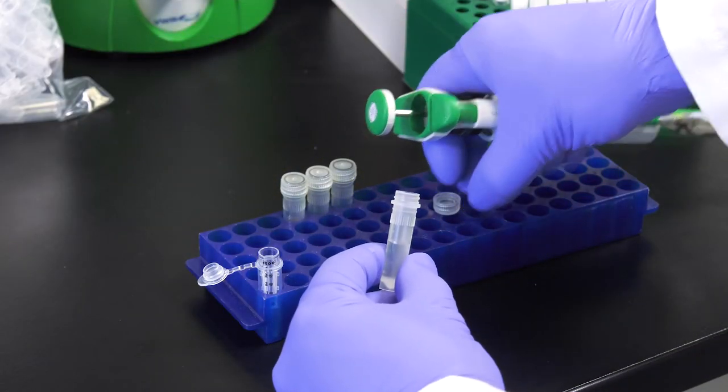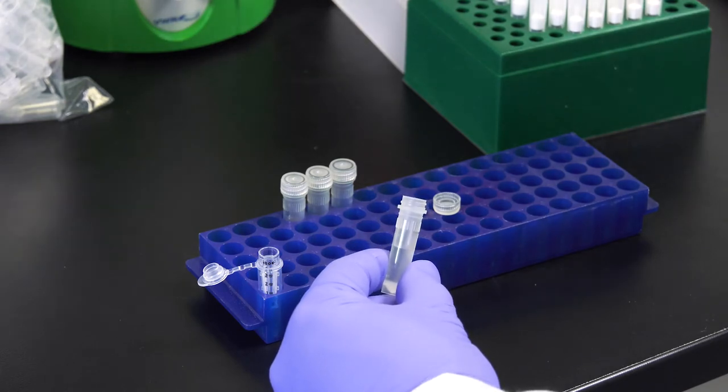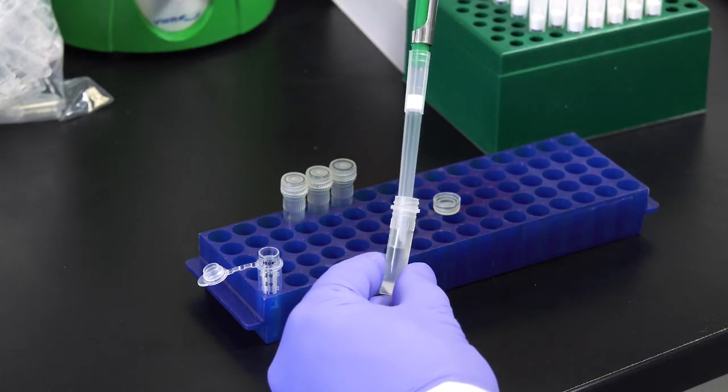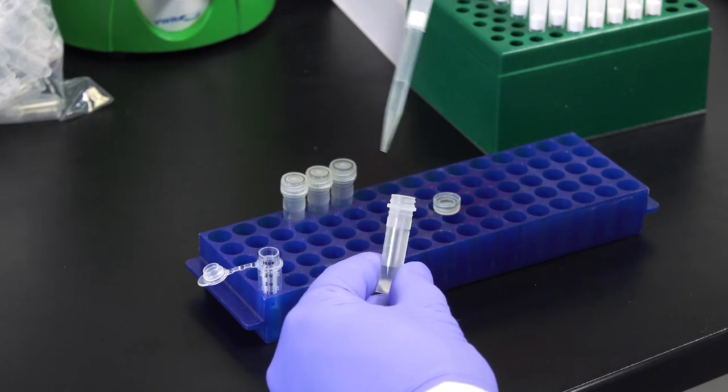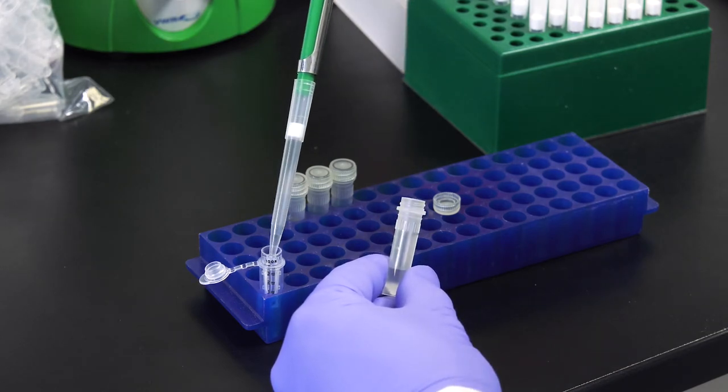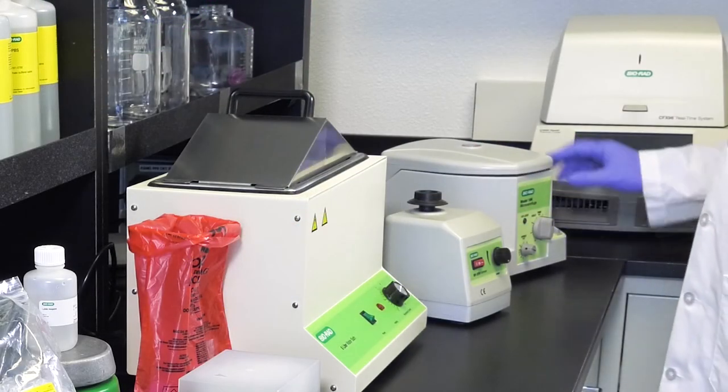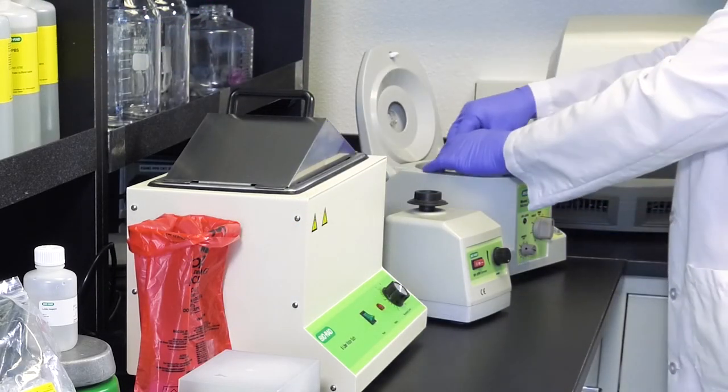Place the purification column in a collector tube and add 500 microliters of the supernatant to the purification column without vortexing the lysate. Seal each column with the collector vial cap. Centrifuge the purification column for 10 minutes at 6000 times G.